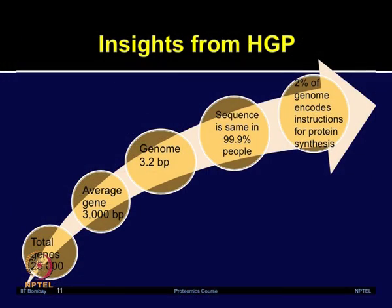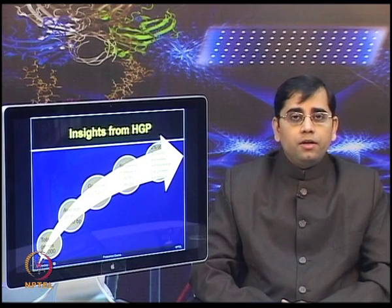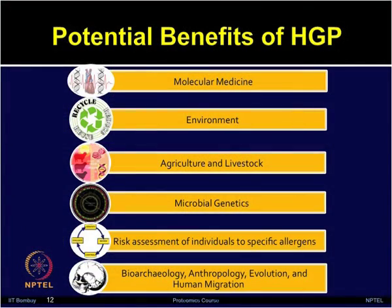The average gene consists of 3,000 base pairs, and the human genome consists of 3.2 billion base pairs. The human genome sequence is almost 99 percent identical in all people, and about 2 percent of the genome encodes instructions for the synthesis of proteins. The potential benefits of the Human Genome Project include information useful for molecular medicine, environment, agriculture and livestock, microbial genetics, risk assessment of individuals for specific allergens, and in other fields such as anthropology, evolution, and human migration.